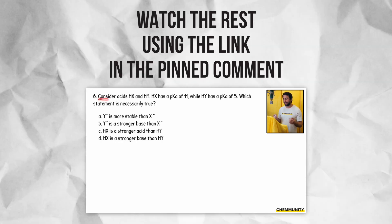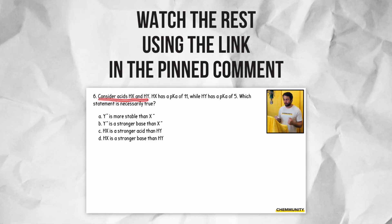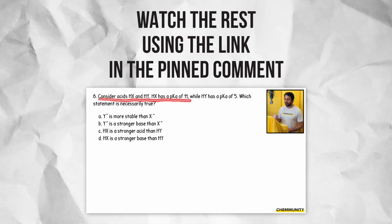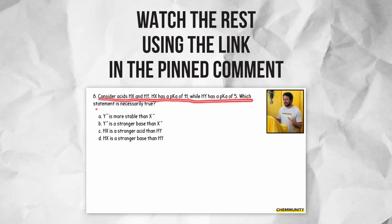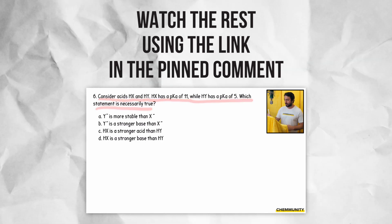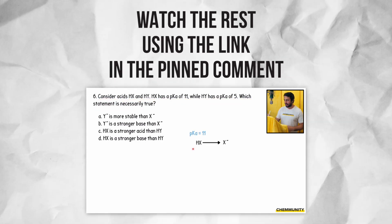Number six asks, consider acids HX and HY. HX has a pKa of 11 while HY has a pKa of 5. Which statement is necessarily true? So we're saying that HX has a pKa of 11 and that is going to go to form X-.